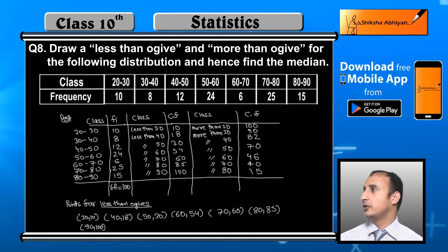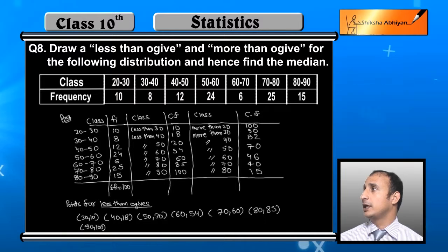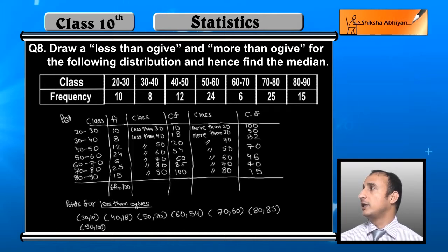If I look at these frequencies for the less than type class, what I use are the upper limits: less than 30, less than 40, less than 50, and so on.